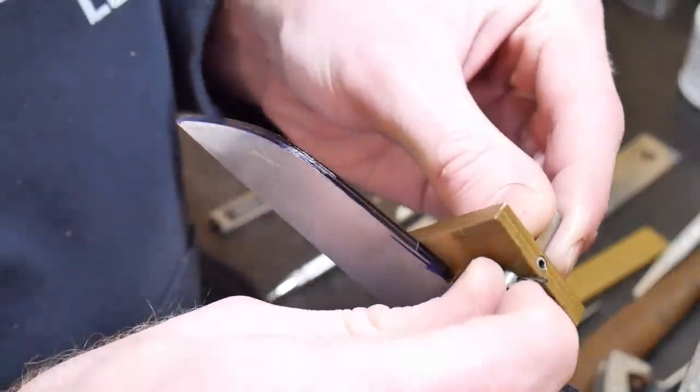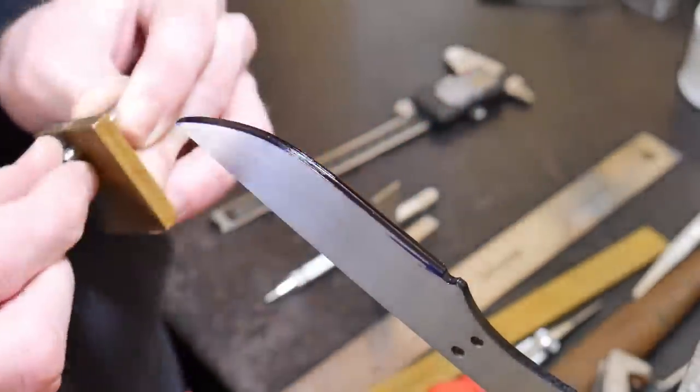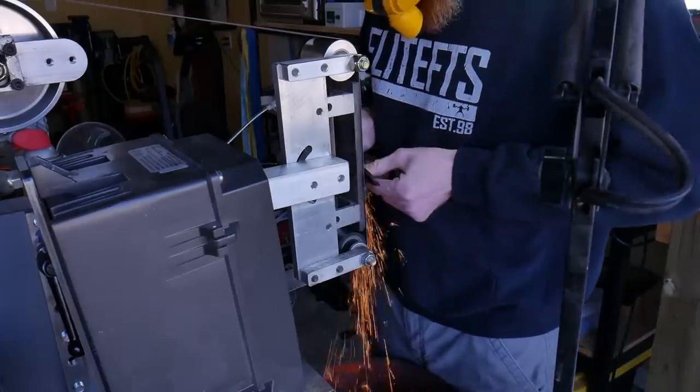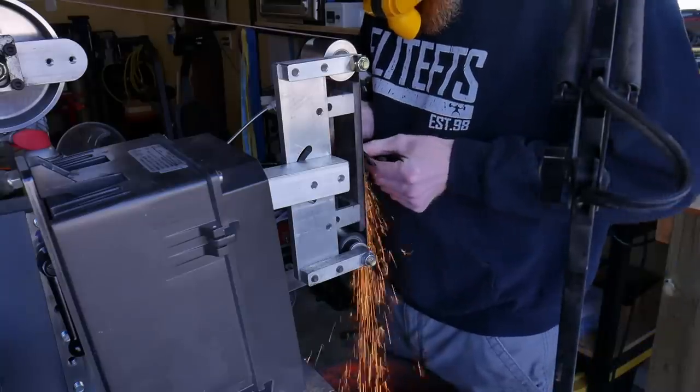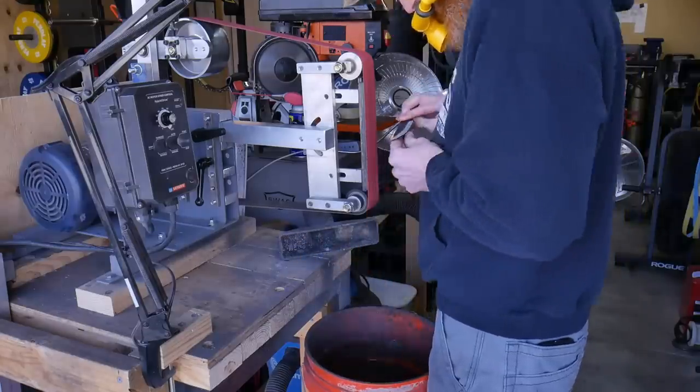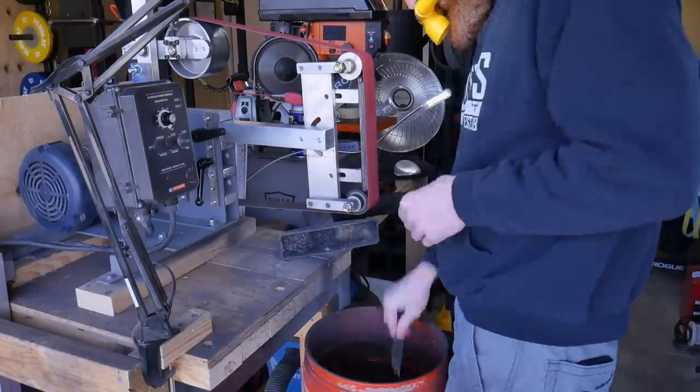First thing we do is mark our scribe line in the center of where the edge will be, or in the center of the blade, and then we grind to that line. I used to mark out my bevel lines but I've kind of stopped doing that and I look for those as I go along since I'm doing a full flat grind.